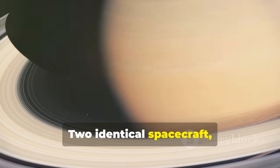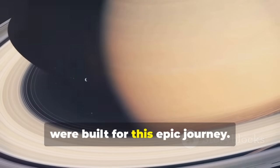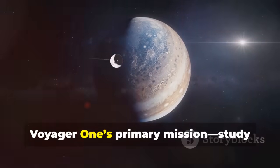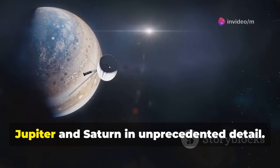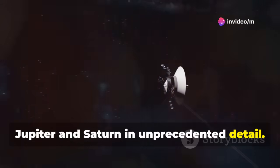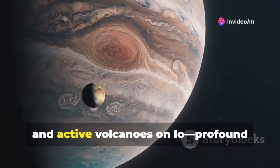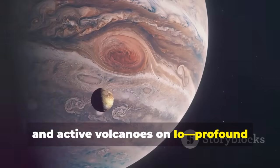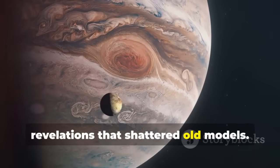Two identical spacecraft, Voyager 1 and 2, were built for this epic journey. Voyager 1's primary mission, study Jupiter and Saturn in unprecedented detail. It revealed Jupiter's storms, faint rings and active volcanoes on Io, profound revelations that shattered old models.